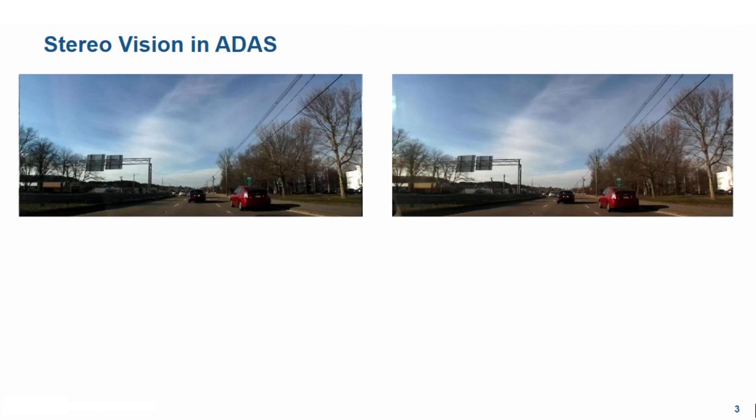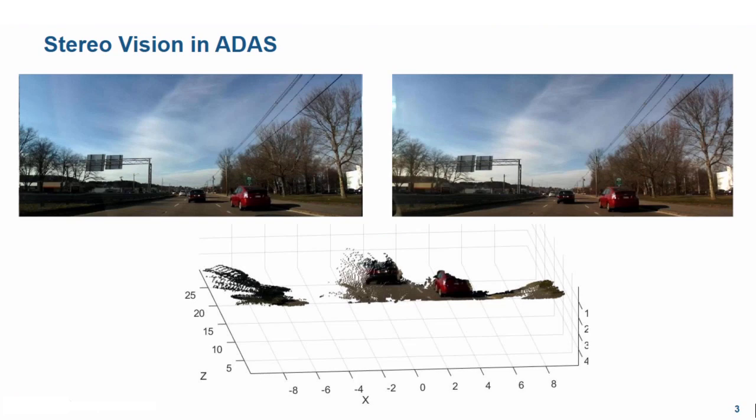StereoVision is the process of comparing two or more views of the same scene and recovering the depth information from the camera images by estimating the relative depth of points in the scene. The output of this computation is a 3D point cloud, where each 3D point corresponds to a pixel in one of the images. It is used in applications such as Advanced Driver Assistance Systems or Robot Navigation, where StereoVision is used to estimate the actual distance or range of an object of interest from the camera.